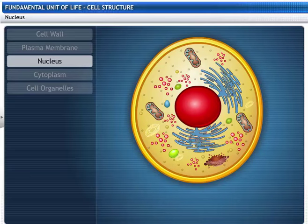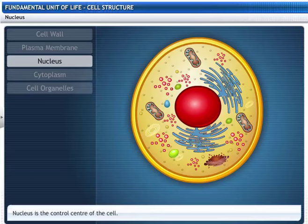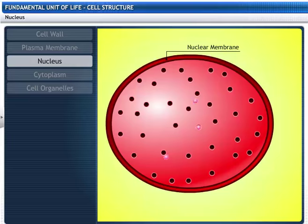Let's now look into the cell. This is the control center of the cell called the nucleus. The nucleus has a nuclear membrane which is double layered. The nuclear membrane is perforated to allow substances to enter and leave the nucleus.